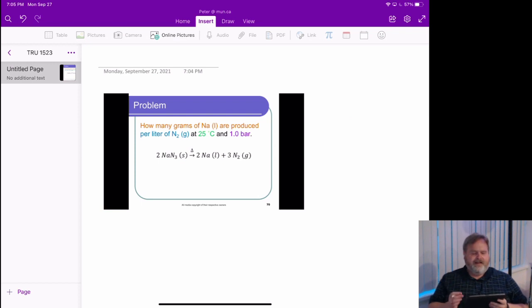Now here we see that we're talking about grams of sodium per liter of N2. We're talking about two different chemicals, but they are connected together by that balanced equation. So those two amounts, more correctly, are connected together by moles. That's what the stoichiometry is telling us.